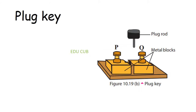The next one is the plug key. You can see a plug key in this diagram. P and Q are the terminals connected to the circuit. R is a gap between the metal blocks made of brass. When the plug is inserted into the hole between the gap, the circuit is closed. When the plug body is removed, the circuit is disconnected.